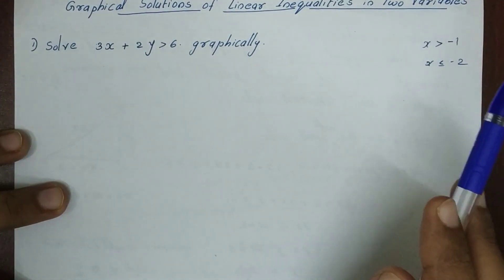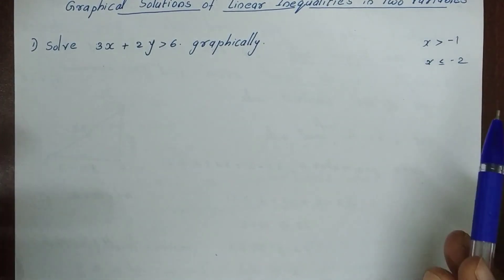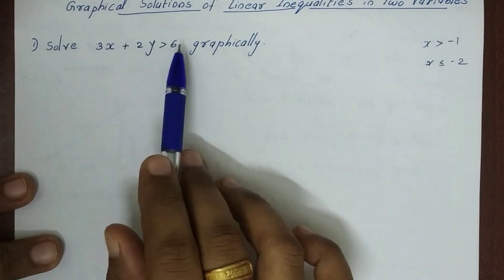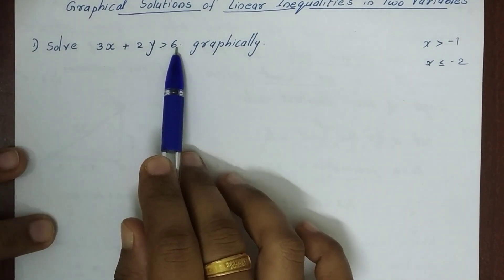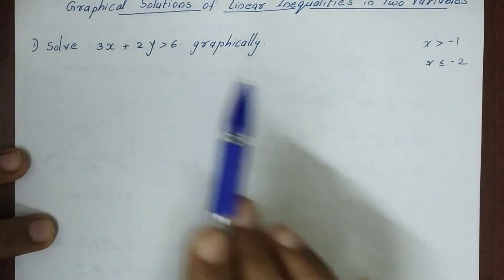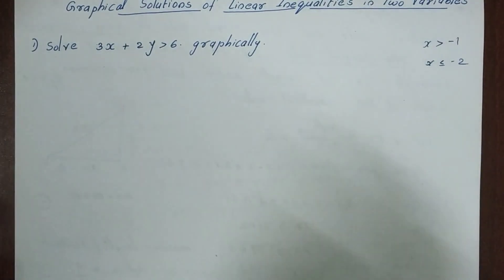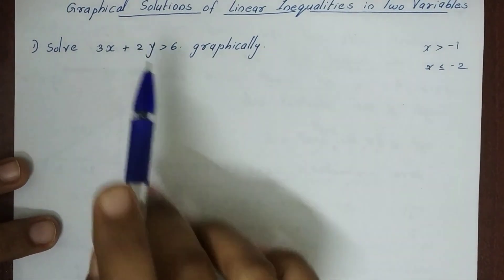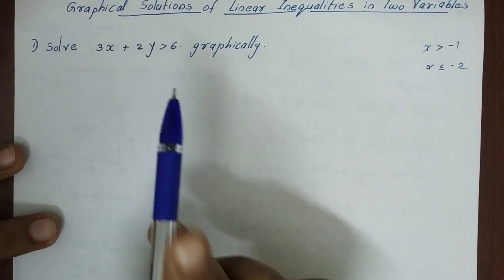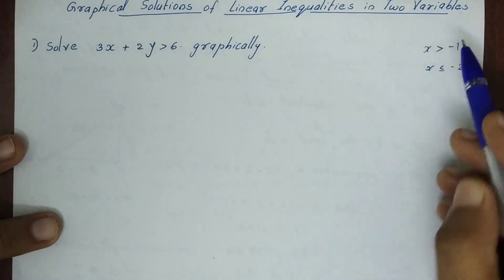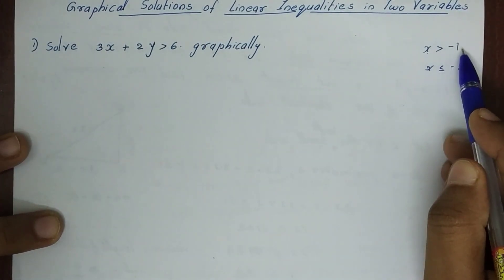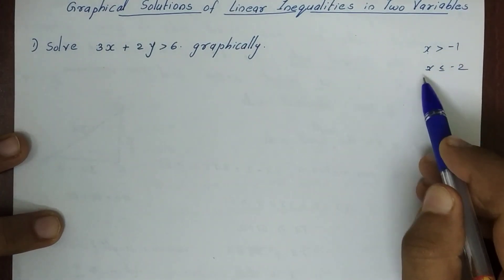We have an inequality here: 3x plus 2y greater than 6. We have two variables, and we will find solutions. We will find x greater than minus 1, and x less than or equal to minus 2.